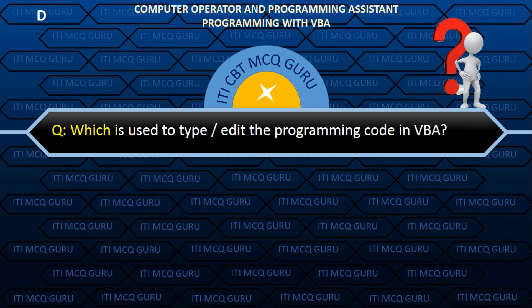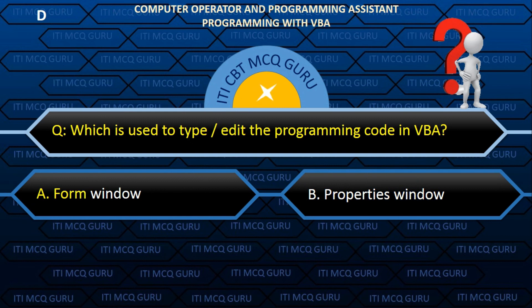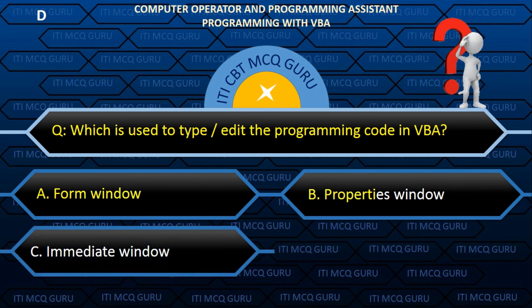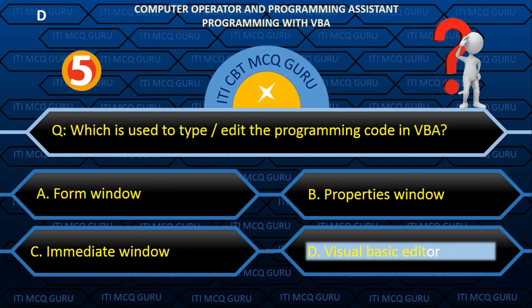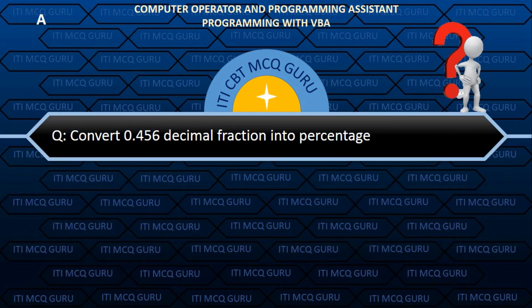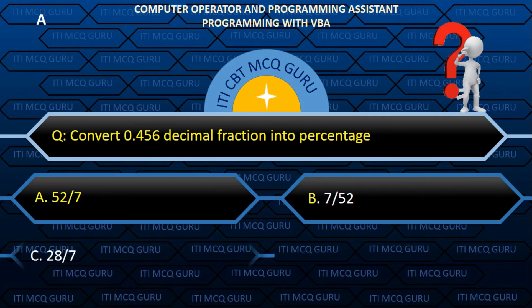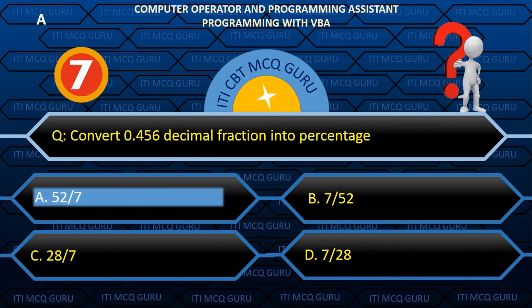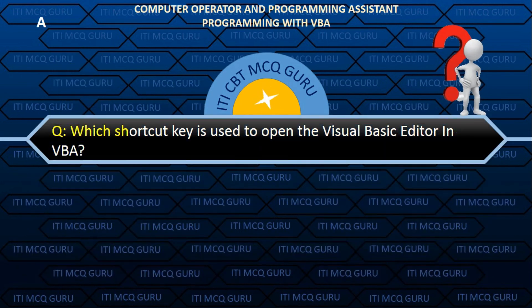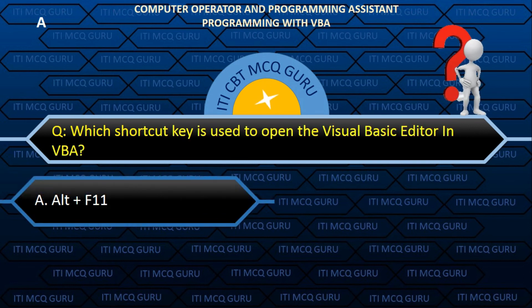Which tool is used to type and edit the programming code in VBA? Answer: D. Visual Basic Editor.